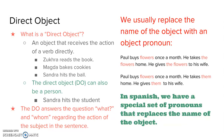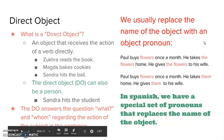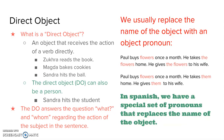We usually replace the name of an object with an object pronoun, and we do this both in English and Spanish. Here's a silly example in English: Paul buys flowers once a month. He takes the flowers home. He gives the flowers to his wife. It's okay to mention flowers once because you have to be specific, but after that it sounds repetitive. So in English, we mention the direct object once and then use a pronoun: Paul buys flowers once a month. He takes them home. He gives them to his wife. Here we're using the object pronoun 'them' to replace flowers.